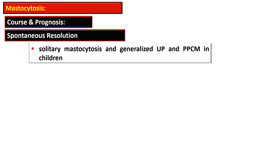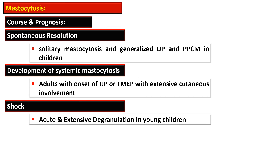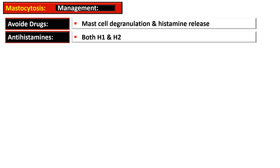Regarding course and prognosis, there can be spontaneous resolution as occurs in solitary mastocytosis, generalized urticaria pigmentosa, and papular-plaque cutaneous mastocytosis in children. There can be development of systemic mastocytosis as occurs in adults with onset of urticaria pigmentosa or telangiectasia macularis eruptiva perstans. With extensive involvement, patients may have shock due to extensive acute degranulation in young children. In management, patients should avoid drugs that degranulate mast cells, and antihistamines both H1 and H2 can be used.